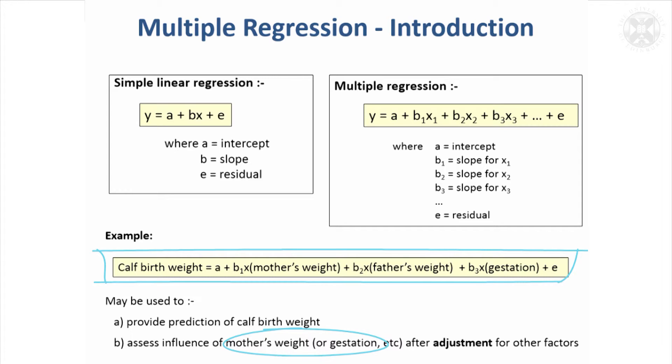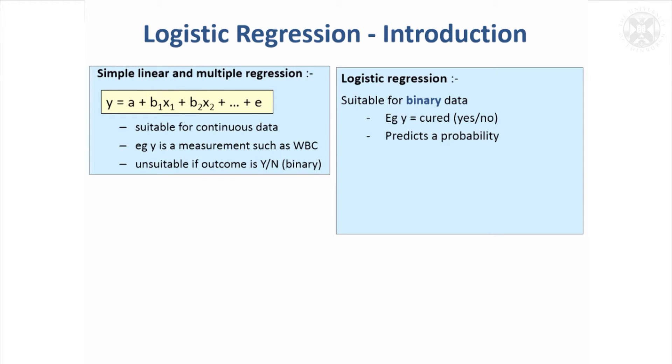Another type of regression that you may have heard of because it's quite a popular type of regression is logistic regression. I think the only thing to take note of today is that logistic regression is suitable for binary outcomes. So rather than trying to predict a measurement, you're trying to predict something that does happen or doesn't happen - you're trying to predict a probability based on your equation.